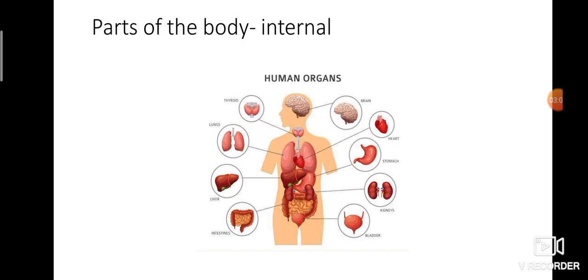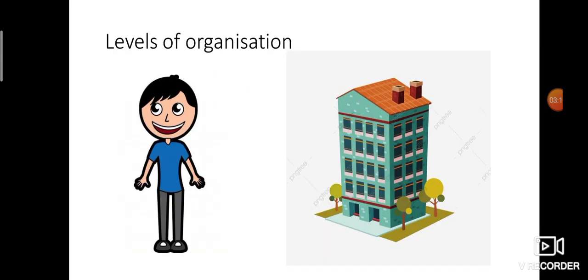So these are the internal parts of the body. Internal means inside our body; external means on the exterior, present outside the body. Now, levels of organization — what do we mean by levels of organization? Here two pictures are given: one is a man standing and another is a building. We are going to compare our human body with that building. Levels of organization means how our human body is made up.